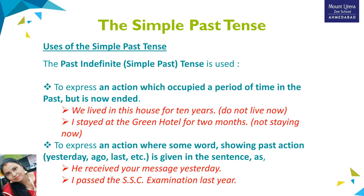More uses of simple past tense: to express an action which occupied a period of time in the past but is now ended. For example, 'We lived in this house for 10 years' — they were living there but are not living there now. Second example: 'I stayed at the Green Hotel for two months' — he stayed but is not staying now.